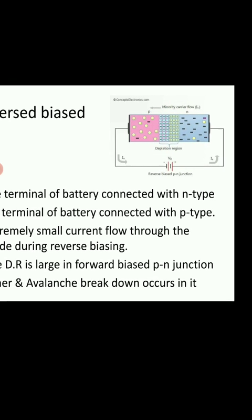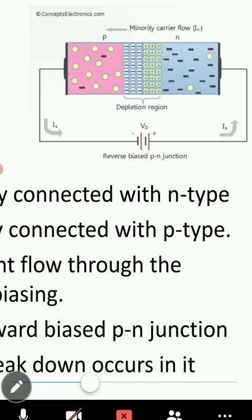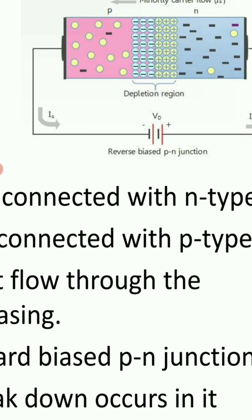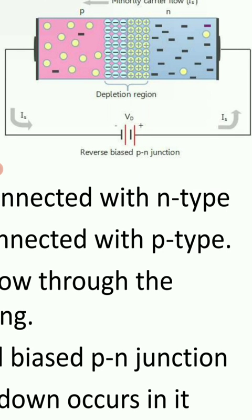Now what will happen? When we are connecting the negative terminal of a battery to the P-type semiconductor — in P-type semiconductor, the majority charge carriers are holes. Due to which, these holes are attracted towards the negative terminal of the battery.